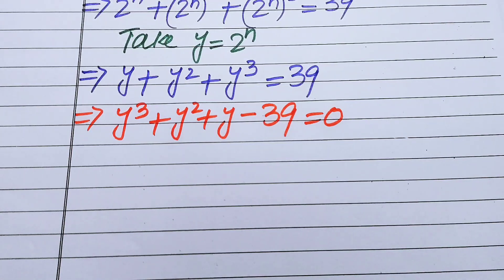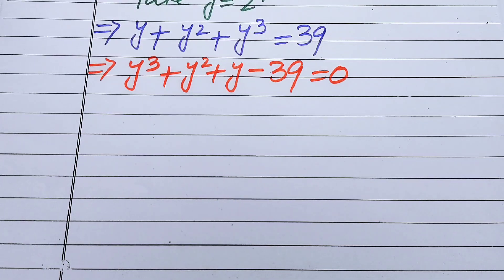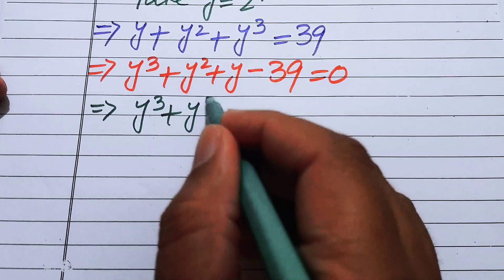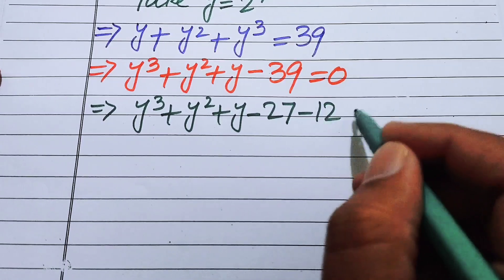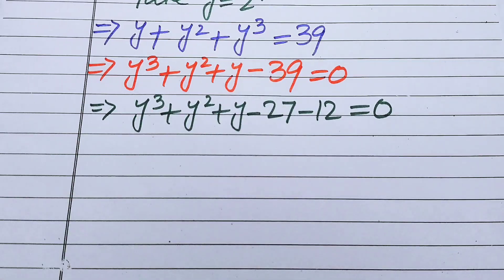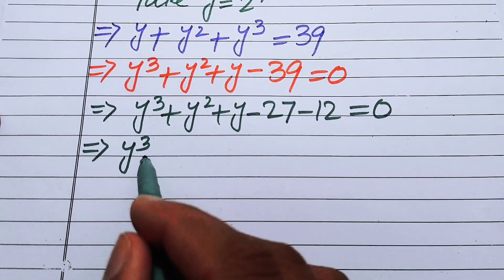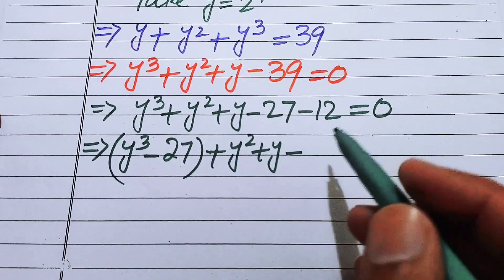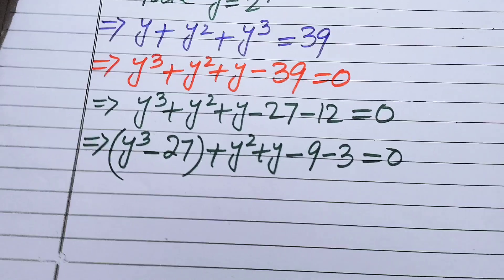Now we focus on the 39 and break it apart. We write the equation as y³ plus y² plus y minus 27 minus 12 equals 0. Since 27 plus 12 equals 39, we then rewrite minus 12 as minus 9 minus 3, because minus 9 minus 3 equals minus 12.